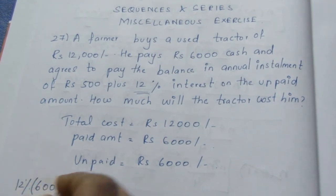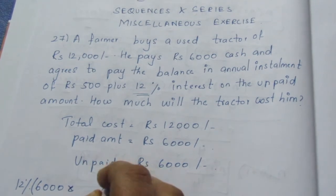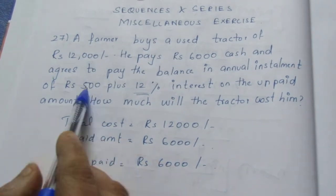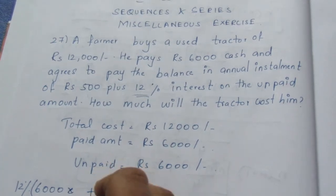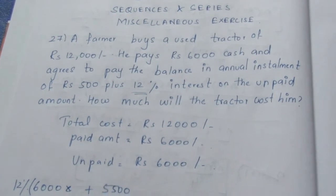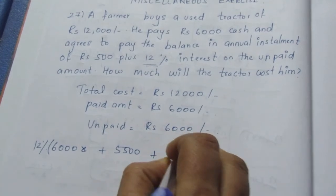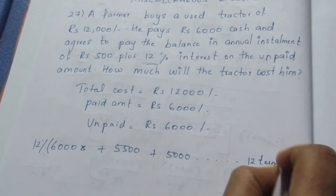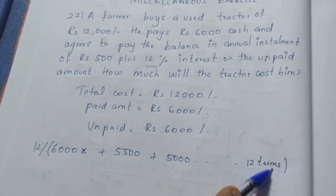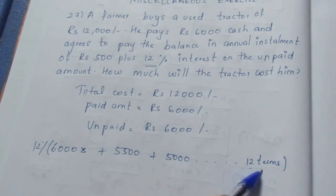So in the first month, 12% of 6,000 is the interest, and he pays 500. After subtracting 500, the next month's unpaid amount is 5,500. The following month it becomes 5,000 unpaid, and this continues up to 12 terms. We subtract 500 each month, so there are 12 terms in this series.